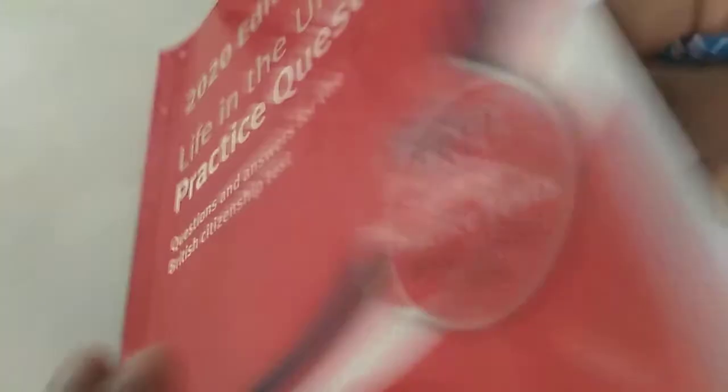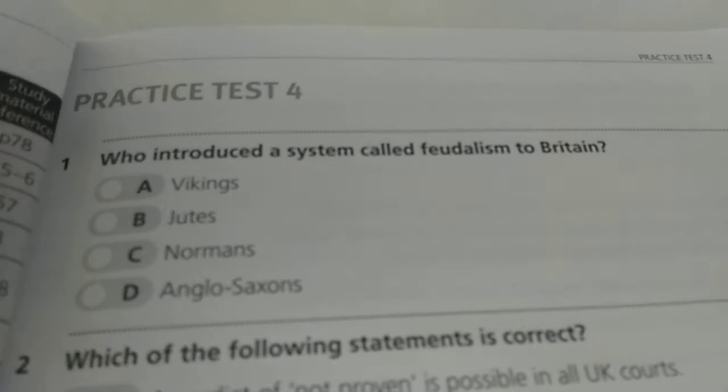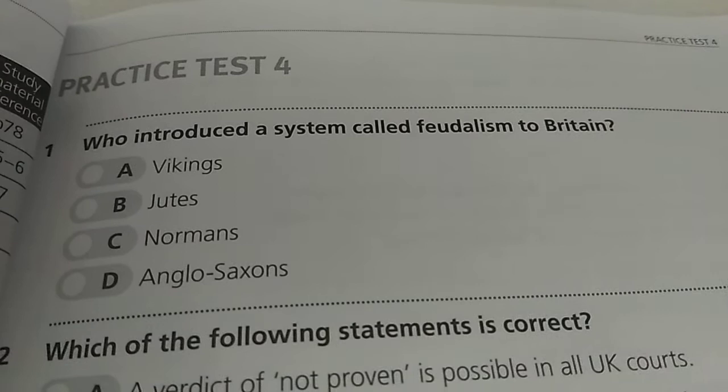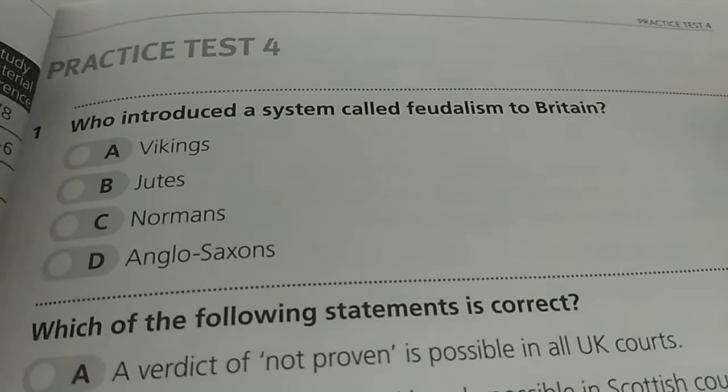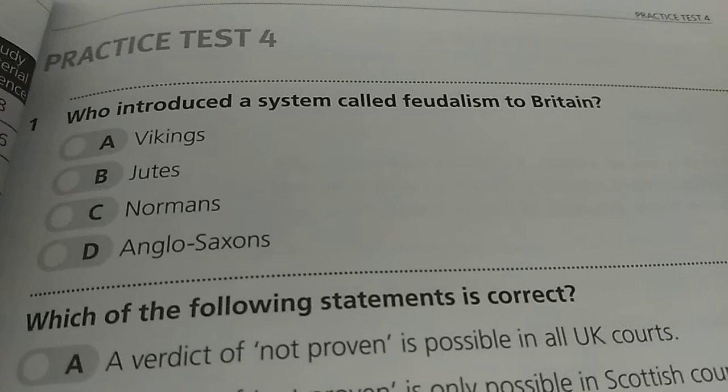Today we are in the 2020 edition of Life in UK Test, Practice Test No. 4. Question No. 1: Who introduced a system called Feudalism to Britain? Options: A. Vikings, B. Jutes, C. Normans, D. Anglo-Saxon. The correct answer is C — the Normans.